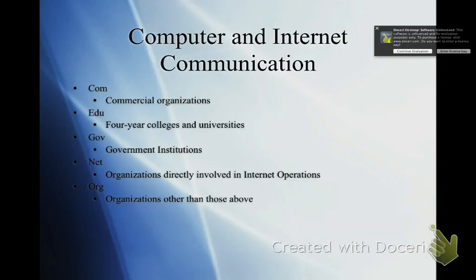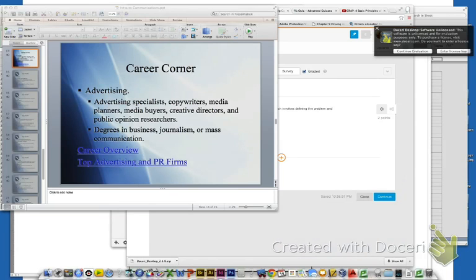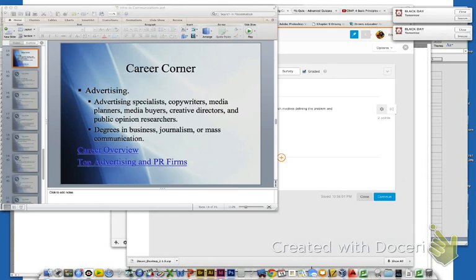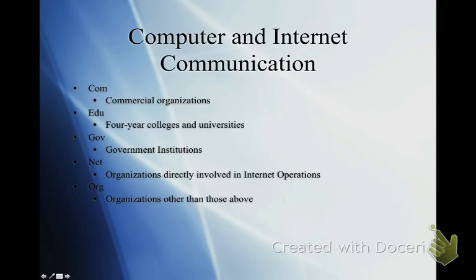Regarding the internet, let's talk about domain extensions: .com, .edu, .gov, .net, and .org. Most that you see is .com — those are commercial organizations. You also see .org and .edu for four-year colleges, and .gov for government institutions. Those are good sites to get information from because the government isn't going to give you false information. The .coms, however, anybody can get — I could make a .com and post incorrect information that people might believe. That's why we need to watch what we search and make sure it's correct before assuming the internet is always true.